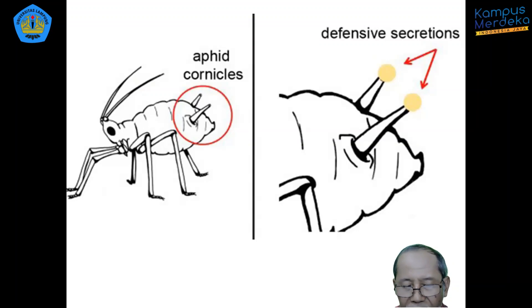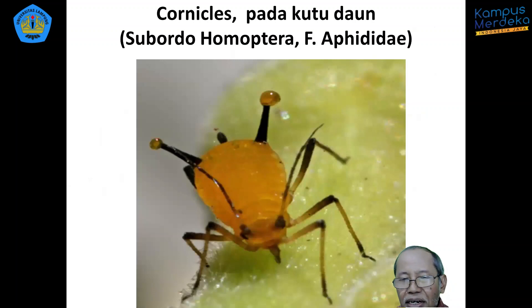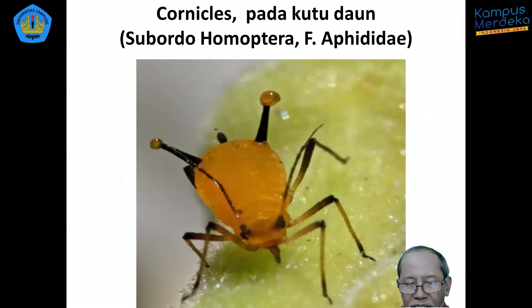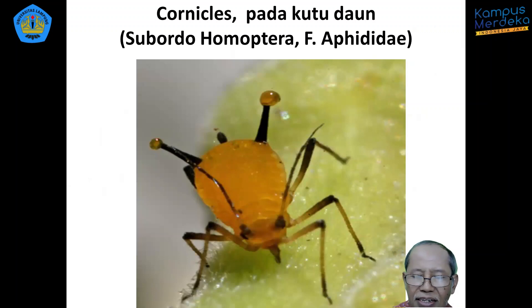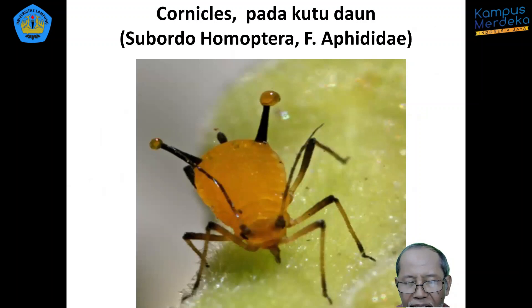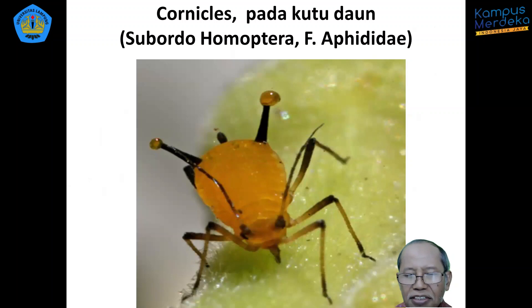Pada waktu-waktu tertentu ketika perlu menyampaikan cairan komunikasi, yang disebut feromon, maka sekresi cairan dari kornikel ini akan mengirimkan bau sebagai isyarat adanya bahaya, sehingga individu lain dalam populasi harus bertindak. Demikian materi abdomen dan hal-hal yang berkaitan dengan organ dan embelan yang ada pada abdomen. Assalamualaikum warahmatullahi wabarakatuh, terima kasih.